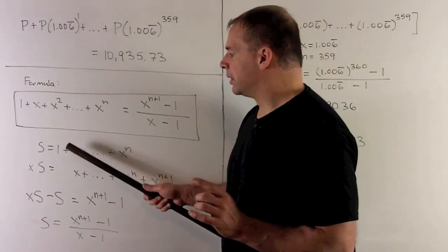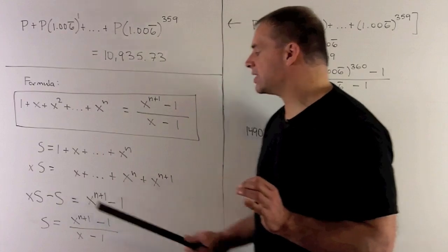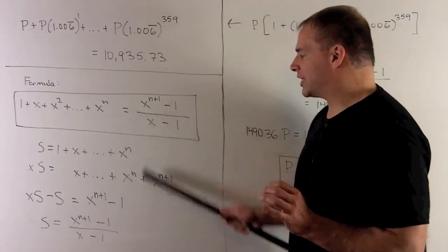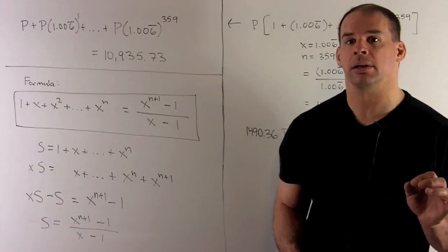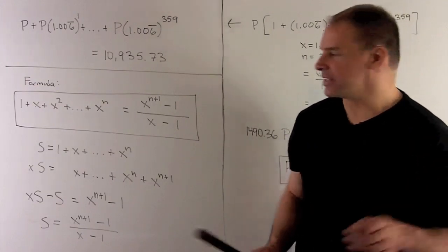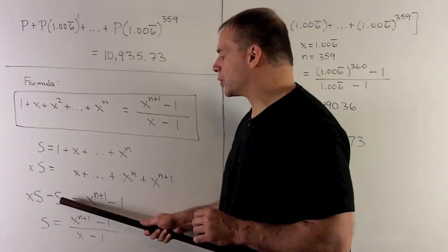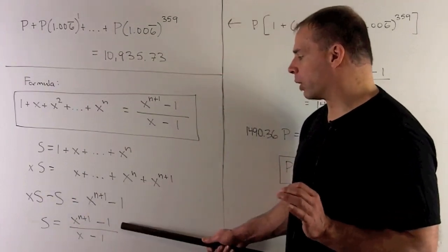We take the difference. We'll take x times S minus S. All the middle terms are going to cancel out, leaving me with x to the n plus 1 minus 1. Then on the left-hand side, I can factor out an x minus 1 and then divide. And then that gets us to the formula.